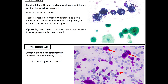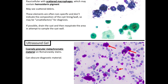Other findings include cyst fluid, which is paucicellular with scattered macrophages that may contain hemosiderin pigment and scattered debris. Another thing that may come up on boards or in practice is ultrasound gel — a coarsely granular metachromatic material on Romanowski stains that can obscure diagnostic material; the red arrows here are pointing to ultrasound gel.